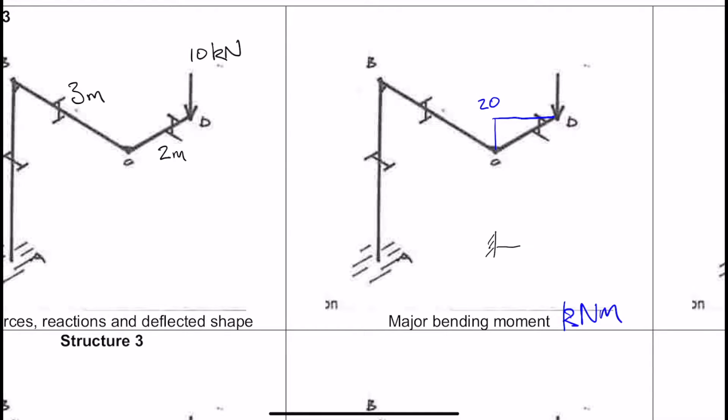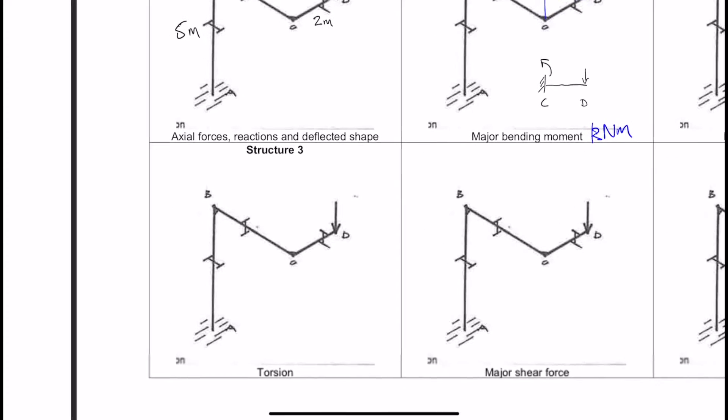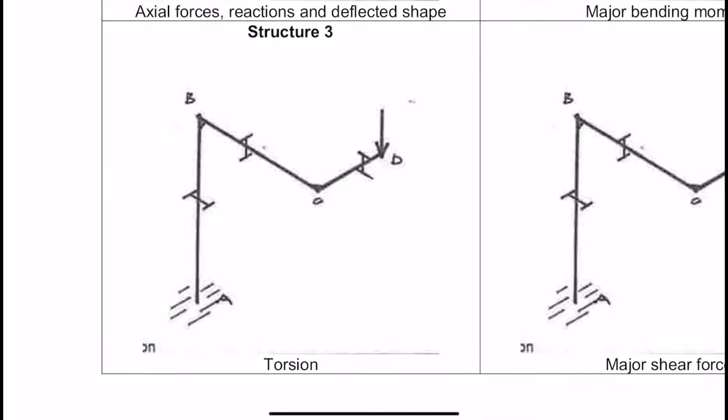If we imagine a cantilever at C and D, so now we have a reaction of 20 there. How does that transmit into BC? That is transmitted via a torsion. So we have to now jump to the torsion diagram. And that torsion is going to be equal to the reaction, 20 kilonewton meters. The torsion doesn't change along the length of BC. The only thing that is causing torsion is member CD acting on it.